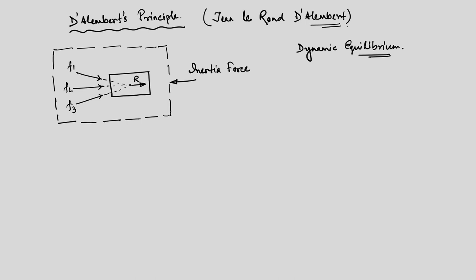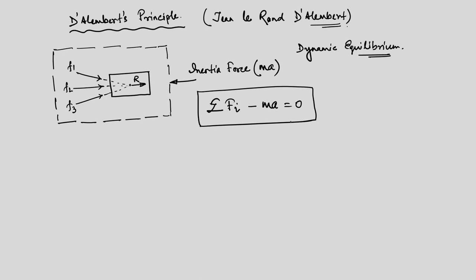Recalling the third law, the two forces must be equal in magnitude and opposite in direction. D'Alembert says: the sum of forces acting on a system minus the inertia force — which is mass times acceleration — is equal to zero. So: ΣF − ma = 0. That is D'Alembert's principle, derived from Newton's second law, introducing the concept of dynamic equilibrium.